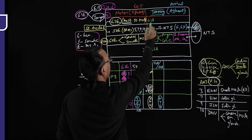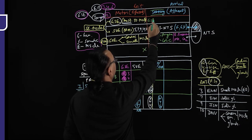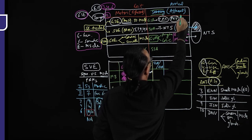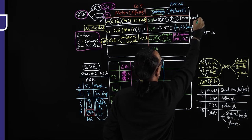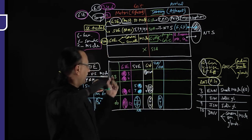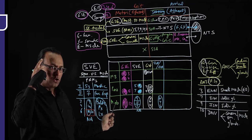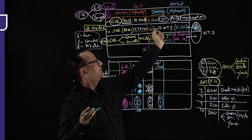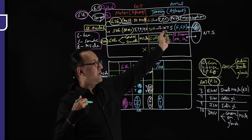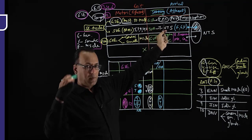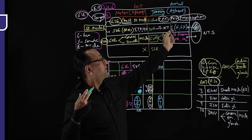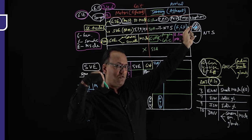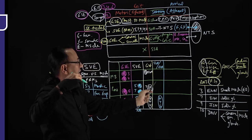Under GSA — general somatic afferent — we have sensations like touch, pain, temperature, pressure, vibration, and proprioception, carried mainly by the trigeminal nerve in the head and neck region. There are three sensory nuclei for the trigeminal: (1) the spinal sensory nucleus for crude touch, pain, and temperature, extending through the medulla into the spinal cord; (2) the main sensory nucleus in the pons for fine touch and most sensations; and (3) the mesencephalic sensory nucleus in the midbrain for proprioception.